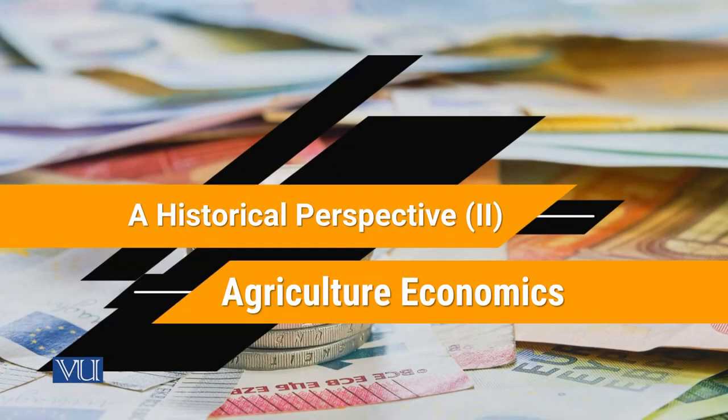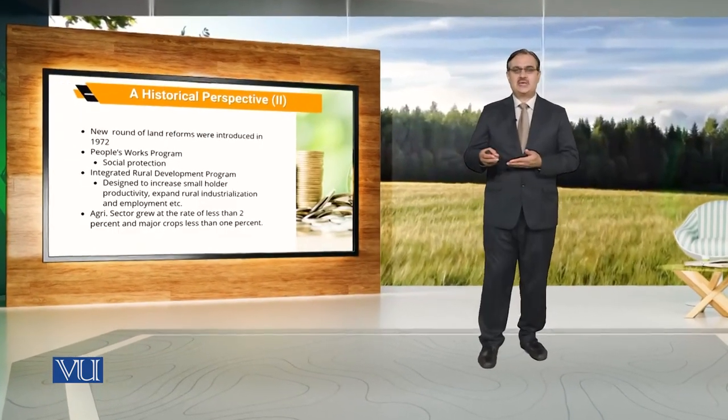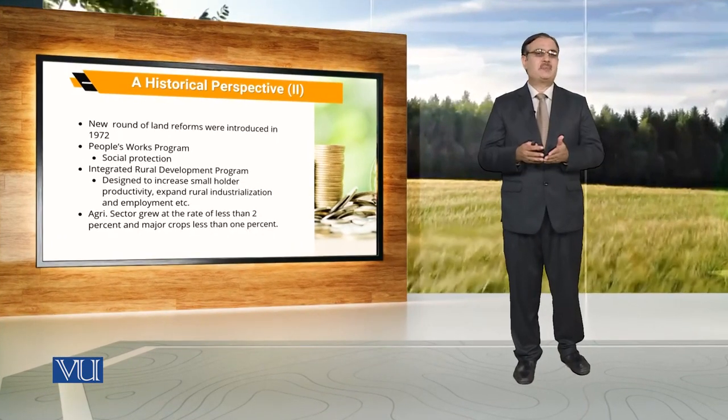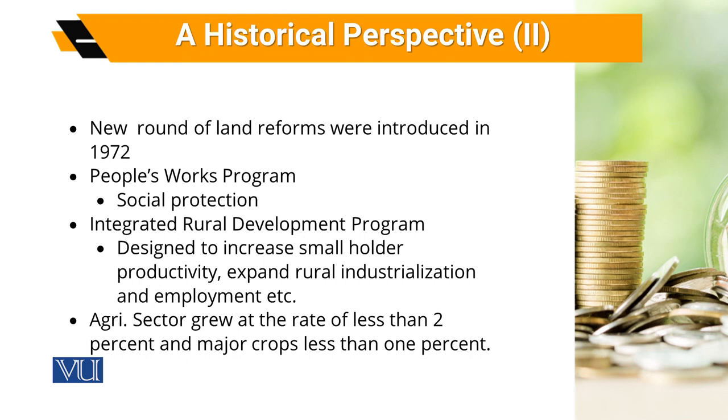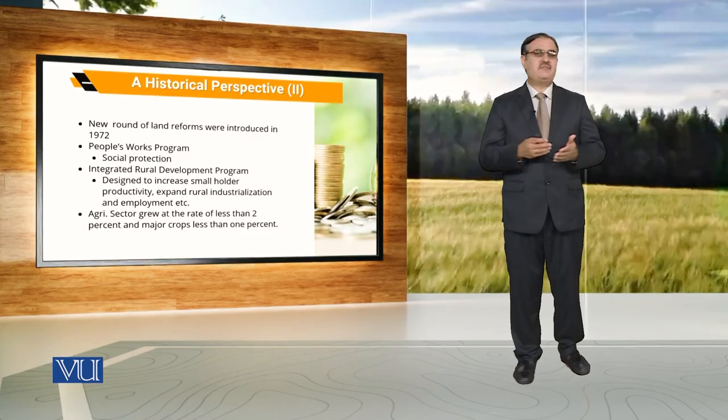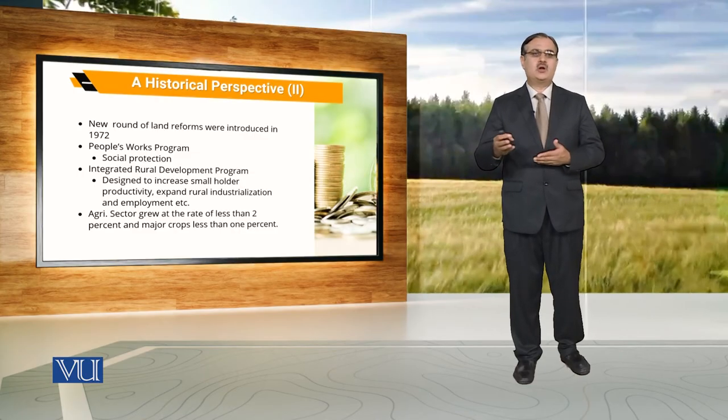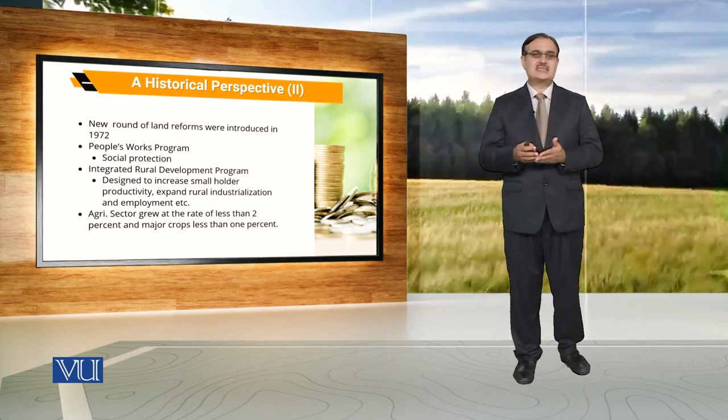From a historical perspective, when we talk about agriculture and rural development, this plays a big role in the economic development of developing economies. When we discuss this with reference to Pakistan, a number of programs and commissions have been established to improve the agricultural and rural sector. In 1972, a new round of land reforms were introduced, and people works programs and integrated rural development programs were also initiated. The objective was to increase the productivity of small holders of agricultural land.